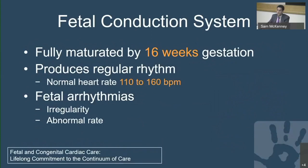Starting with the epidemiology, we can't really talk about fetal heart rhythm disorders without talking about the conduction system itself, which matures by 16 weeks gestation. So pretty early on in embryological life, you have essentially a fully functional electrical system that produces a regular rhythm — essentially a heart rate between 110 and 160. Fetal arrhythmias are defined as any perturbation in that, whether your rhythm is irregular or whether the rate is abnormal, defined as less than 110 or greater than 160.